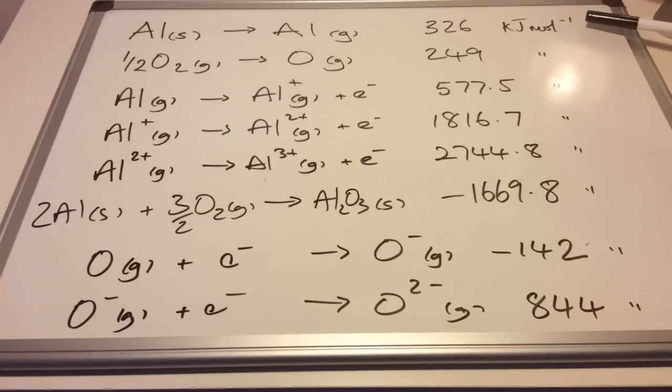Starting at the top we've got the atomization of aluminium, then the atomization of oxygen, and then the next three are the first, second, and third ionization energies for aluminium. Underneath that we've got the enthalpy change of formation for aluminium oxide.